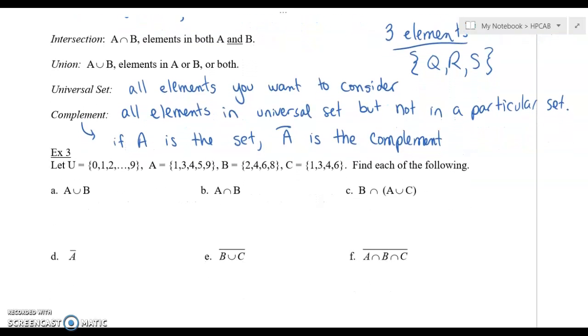I'll show you how this works with this example below. So let U equal 0, 1, 2, 3, all the way up to 9. So U is like our universal set. We're only dealing with numbers from 0 to 9. Then we have A which has these specific numbers, B which has these specific numbers, and C which has these specific numbers. We're going to find each of the following. So we'll play with this complement down here where you see these little bars.